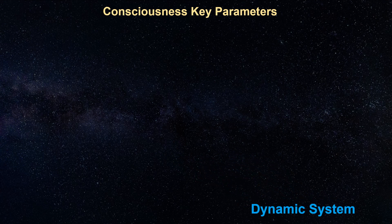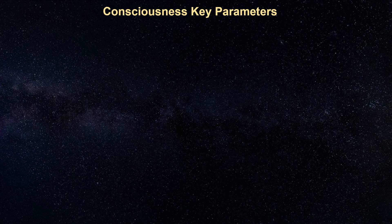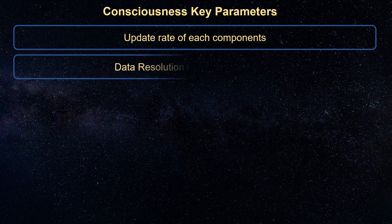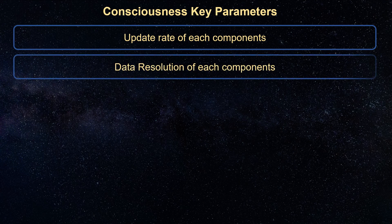Here's a list of key parameters affecting consciousness. First, update rate of internal components — higher update rate reflects a higher level of consciousness, provided that all other things are equal; low update rate causes less effective control. Second, data resolution of each component — higher resolution means a higher level of consciousness, provided that all other things are equal.